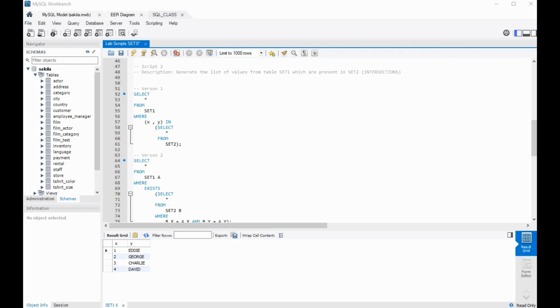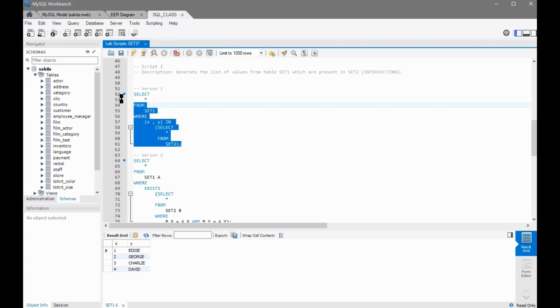We want to get back data that set1 and set2 have in common. If you look at the version one of the script, we are saying select star from set1 where x and y are the columns of set1 in, and then we have open brackets select star from set2. This will bring only those records that are common between those two sets. As you remember, set1 had four records and set2 had two records that were present in set1, so we should get two records back.